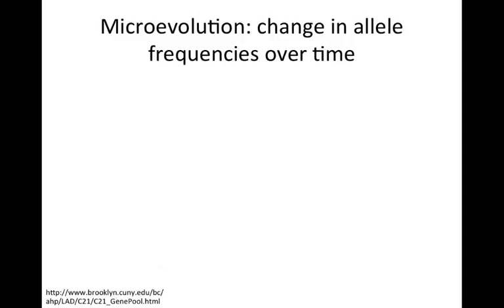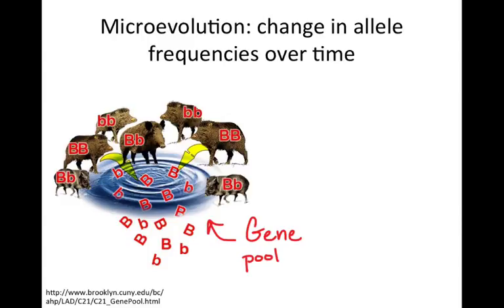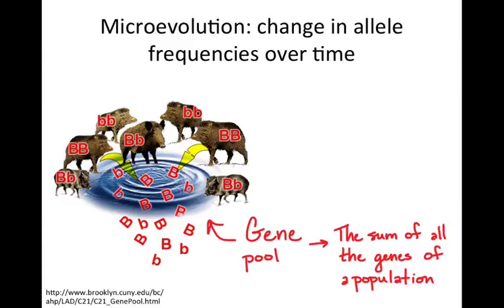So first of all, let's get right down to the molecular changes going on here. One form of evolution is microevolution, which is changes to allele frequencies over time. Populations share gene pools — a gene pool is the sum of all the genes and their alleles for every member of the population.